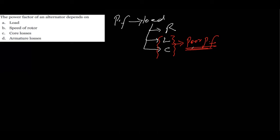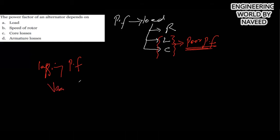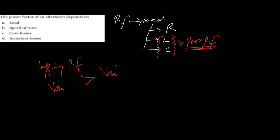At lagging power factor, the generated voltage must be greater than the generated voltage at unity power factor, because losses are increased due to the poor power factor.